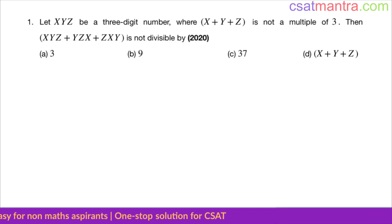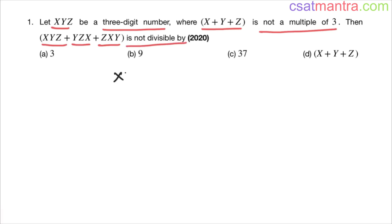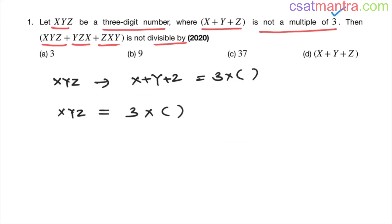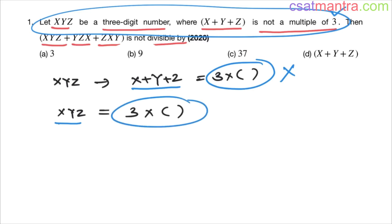Let xyz be a three-digit number where x plus y plus z is not a multiple of three. Then xyz plus yzx plus zxy is not divisible by what? Since x plus y plus z is not a multiple of three, this number is not a multiple of three — we cannot write x plus y plus z as 3 into something, and therefore xyz is not a multiple of three.